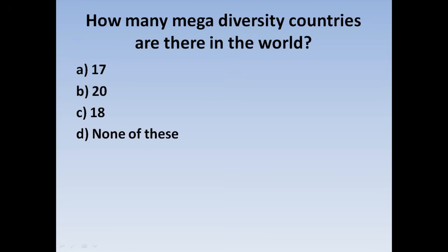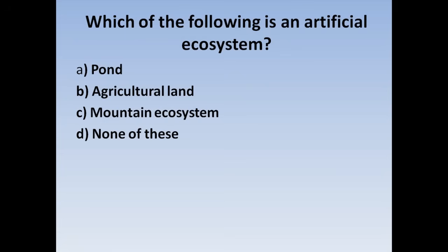Next question: How many megadiversity countries are there in the world? Option A: 17, Option B: 20, Option C: 18, Option D: None of this. Correct answer: Option A, 17 megadiversity countries in the world.